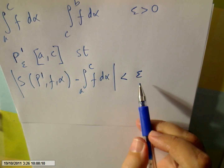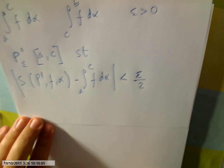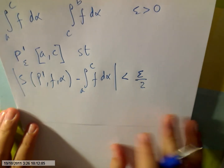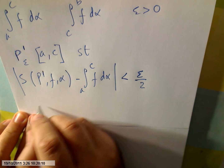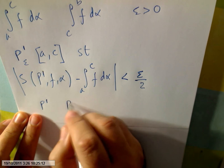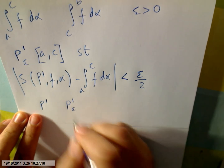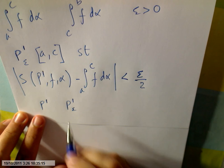Epsilon will be a small positive number, but I'm going to use an even smaller number: ε/2. This condition holds for any P′ finer than P′_ε.